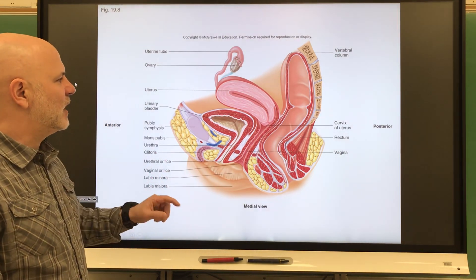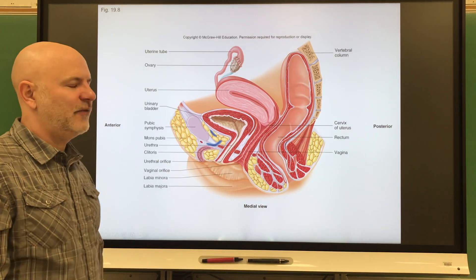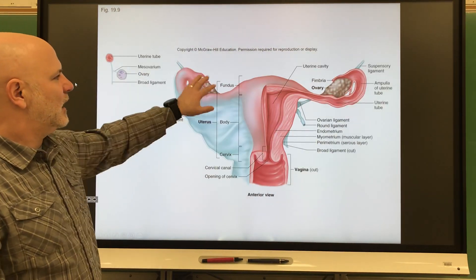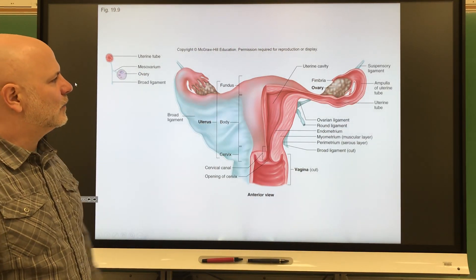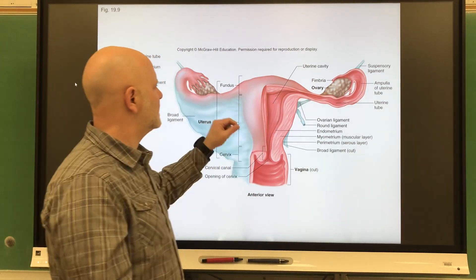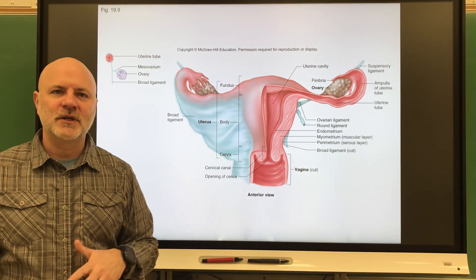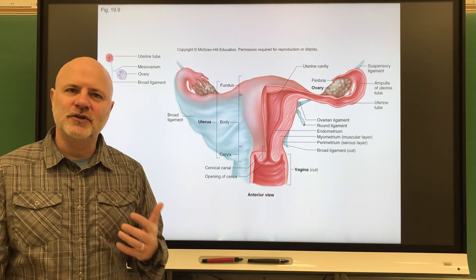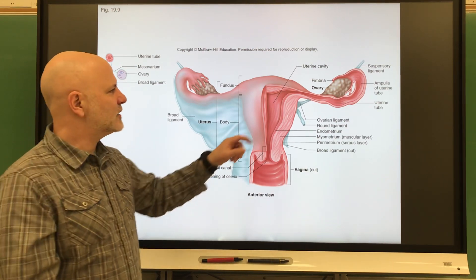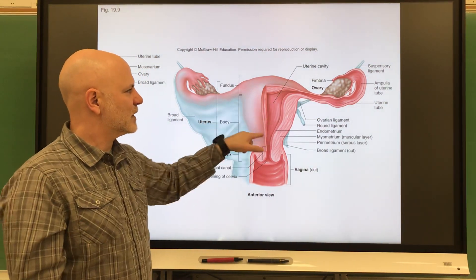Let's take a look at the female accessory organs. Looking at the female pelvis in sagittal section, here are the ovaries, and you can see these tubes next to the ovaries called the fallopian tubes. They're also known as uterine tubes and oviducts. These are paired tubes leading from near the ovaries to the uterus.